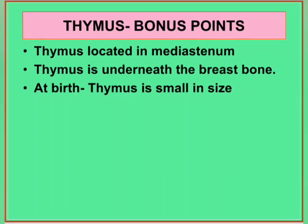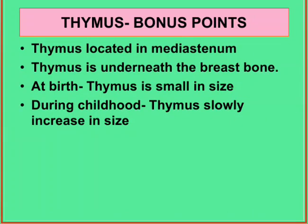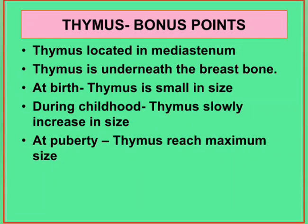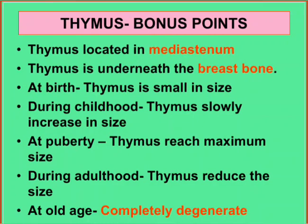The thymus is present underneath the breastbone. At birth, the thymus is very small in size during childhood, and slowly increases in size until the age of 12. At puberty, the thymus reaches its maximum size. During adulthood, after puberty, the thymus slowly reduces in size, and at old age, it completely disappears, so old age people have less immunity.